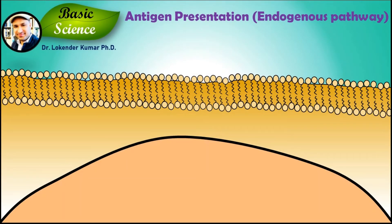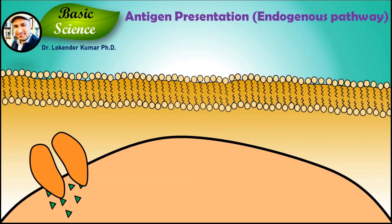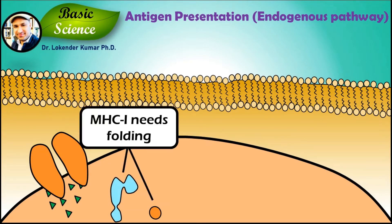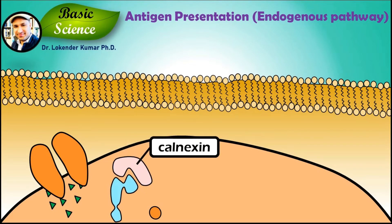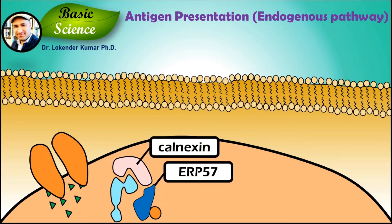Inside the rough endoplasmic reticulum, the MHC class I molecule requires processing and folding before it binds with the endogenous peptide. This folding process is performed by molecular chaperones. First, calnexin, a membrane protein, interacts with the MHC class I molecule, and further it binds with ERP57 to make a three-protein complex.